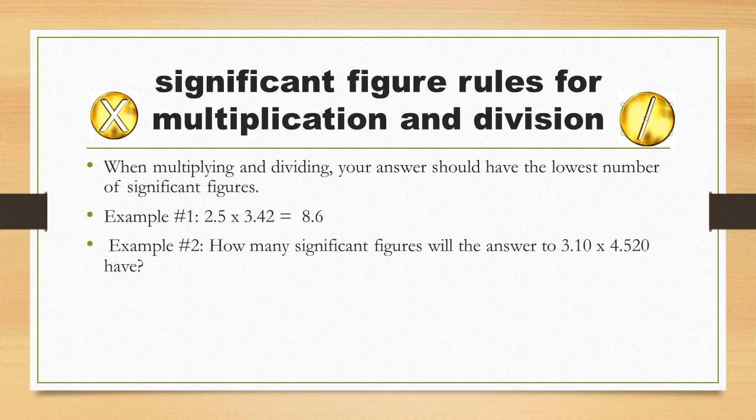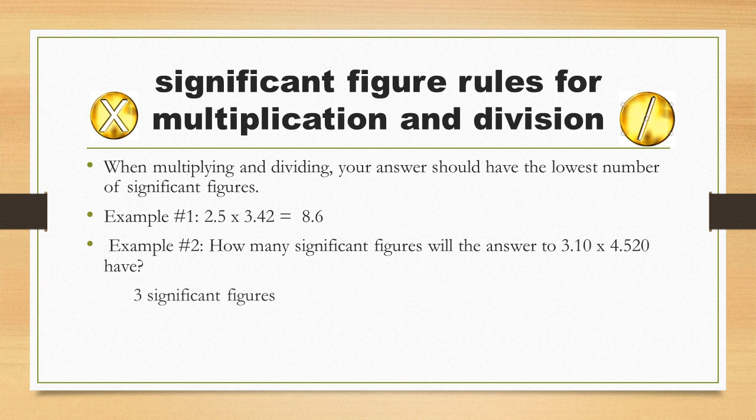Example 2: How many significant figures will the answer to 3.10 times 4.520 have? You may have said 2, but this is too few. A common error is for students to look at 3.10 and think it has 2 significant figures. The zero in the hundredths place is not recognized as significant when in fact it is. 3.10 has 3 significant figures.